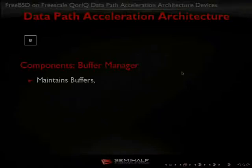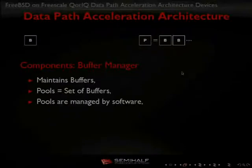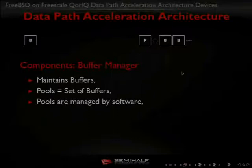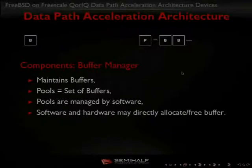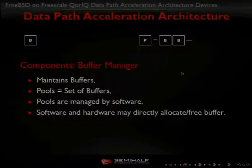The buffer manager maintains buffers in the system. The buffers are organized in a set of pools managed by software — it is software's responsibility to keep buffers in these pools and react to events like pool depletion. Hardware and software can directly use the buffer manager to allocate and deallocate buffers. So, for example, when receiving packets, the buffer manager allocates memory for us — software is no longer responsible for that.